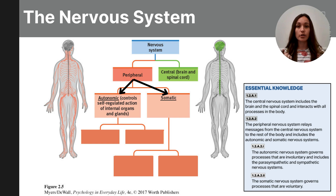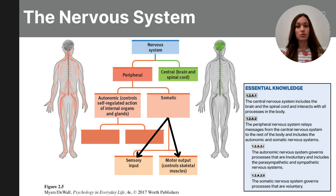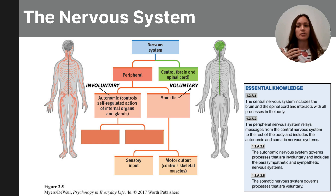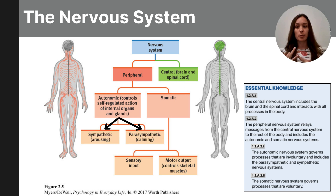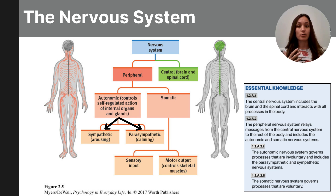Messages in the peripheral nervous system can be autonomic or somatic. The somatic nervous system carries messages to our skeletal muscles and these are voluntary messages — you have conscious awareness and control over them. The autonomic nervous system carries messages that you're not consciously in control of: involuntary functions like digestion, heartbeat, and perspiration. The autonomic nervous system is divided into two more subsets — the sympathetic and the parasympathetic nervous systems — which are important because topics like stress and anxiety relate back to these systems.